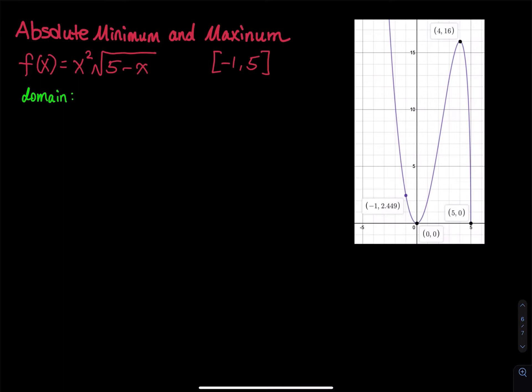f of x equals x squared times square root of 5 minus x on a closed interval from negative 1 to 5. I would like to find the absolute minimum and maximum.